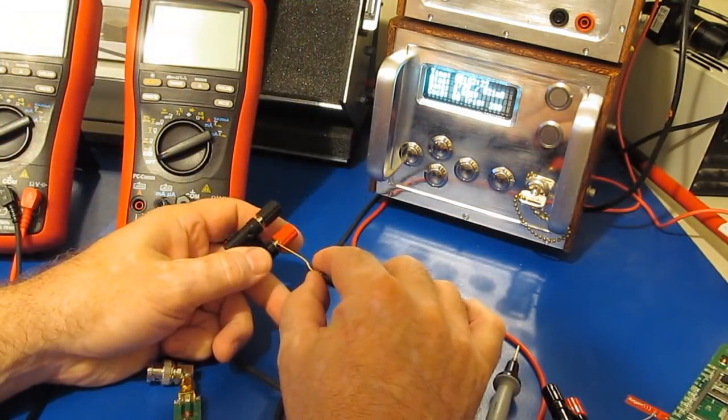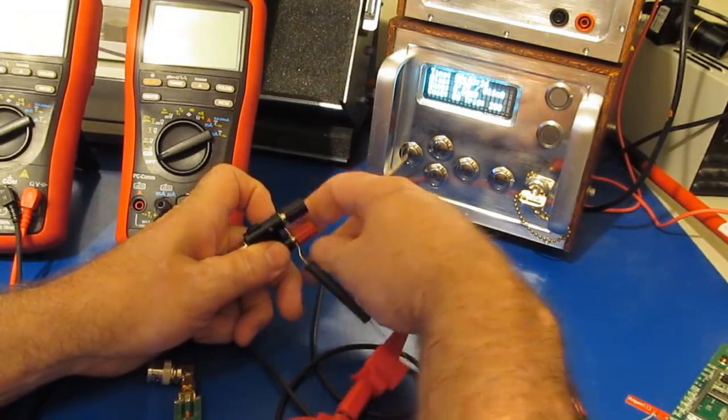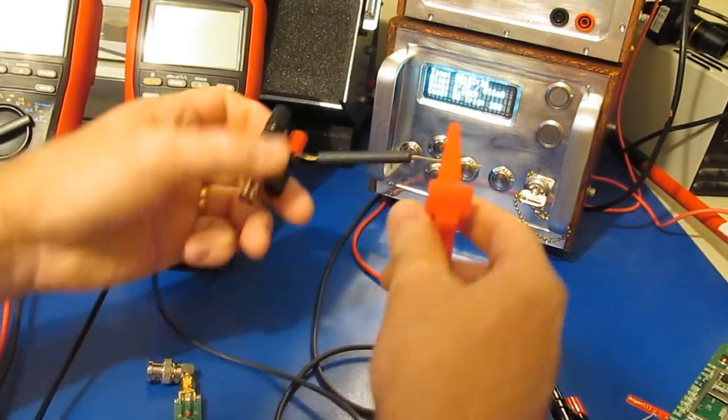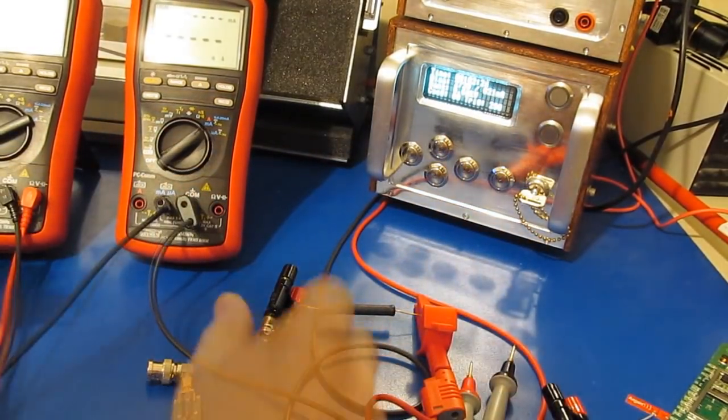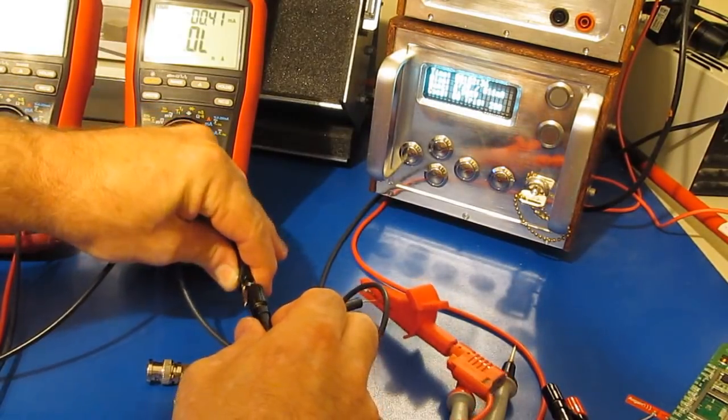So what I'm going to do is just hook this up to the small adapter, keep our resistor in series, and we can go ahead and look at the current through this.